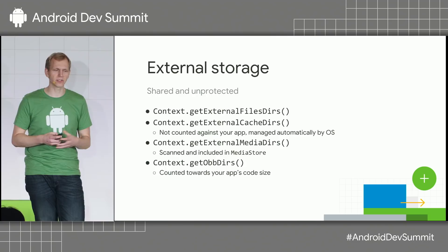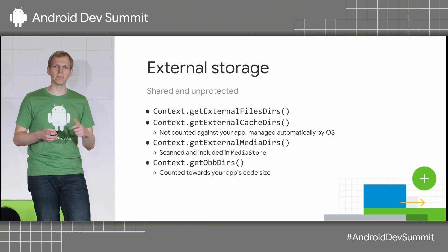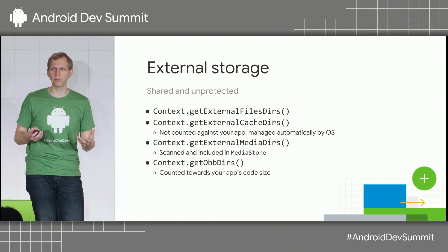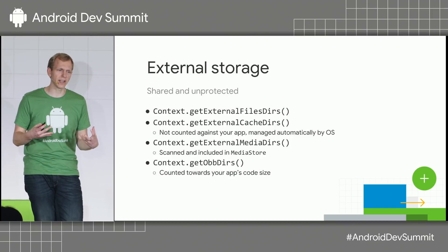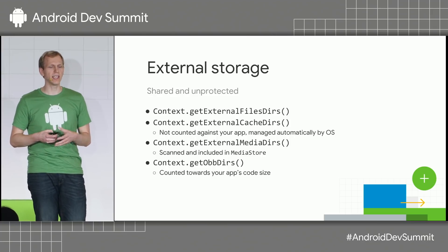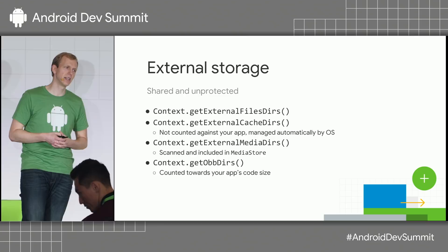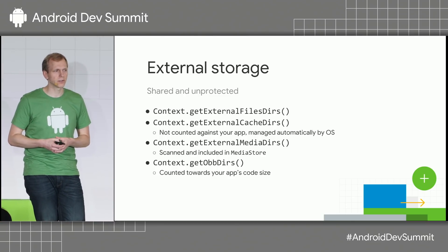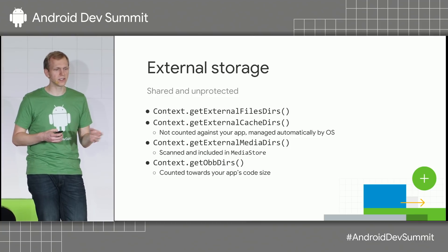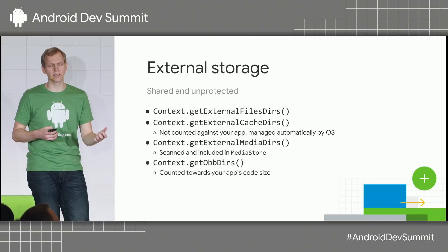The directories in external storage are similar to internal storage. External media dirs — data you save there will be scanned by Media Store on the device, so it's a good place to store photos or videos you want included in the user's gallery. Get OBB dirs — OBB stands for opaque binary blobs. These are large files, typically used for game developers, delivered through Google Play. Data stored there is counted towards your app's code size instead of its data size.